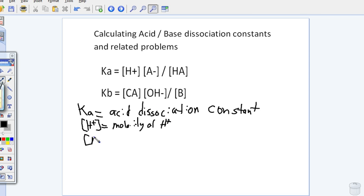A-minus stands for the anion molarity. And HA in brackets stands for the acid that you start with, the acid molarity.